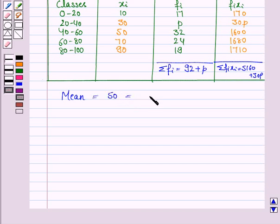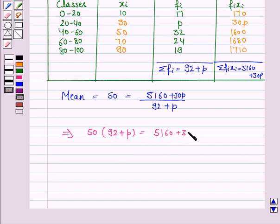Mean is 50 which is given by the formula summation FI XI upon summation FI. That is 5160 plus 30P divided by 92 plus P. So this implies 50 into 92 plus P is equal to 5160 plus 30P.